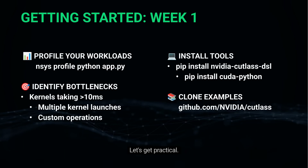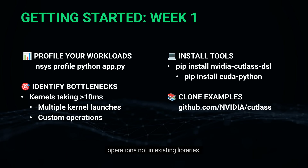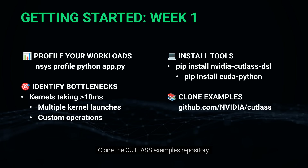Let's get practical. Week 1: profile your workloads with Nsight Systems, identify bottlenecks — kernels taking more than 10 milliseconds, multiple kernel launches that could be fused, custom operations not in existing libraries. Install the tools with pip, clone the Cutlass examples repository. This sets your foundation.